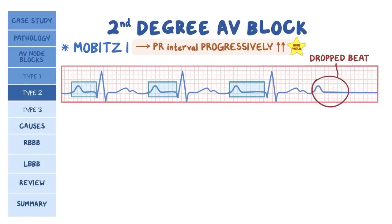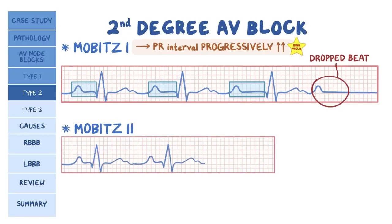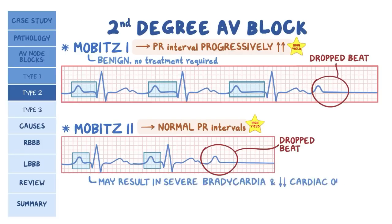Like in Mobitz I, the heart also drops a beat in Mobitz II, except this time conduction through the AV node is all or nothing. Either the atrial impulse goes through with no delay, or it doesn't go through at all. There's no progressive prolongation of the PR interval in Mobitz II. On the ECG, Mobitz II shows a couple of normal PR intervals followed by a dropped beat. Like first degree AV block, Mobitz I is usually benign and doesn't require treatment unless it's causing symptoms. On the other hand, Mobitz II can be dangerous and may result in severe bradycardia and decreased cardiac output, and therefore requires treatment with a pacemaker.